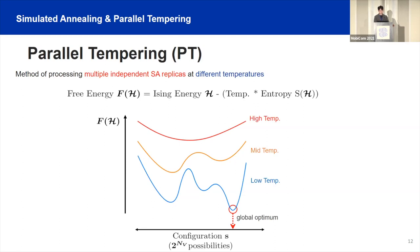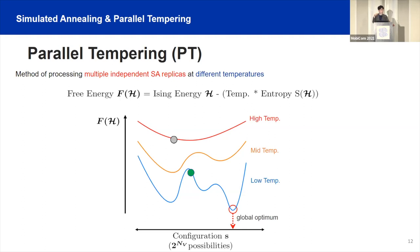Parallel tempering can help with this. Instead of having one spin system, we now have multiple replicas. We apply simulated annealing independently to each replica, and at some point the system decides whether to accept an exchange of temperatures. The replica stuck at a local minimum can exchange temperature with another replica, changing its energy landscape. The replica that previously overcame the high barrier can now easily find the global optimum. So parallel tempering helps the spin system escape local minima and improves overall optimization performance.